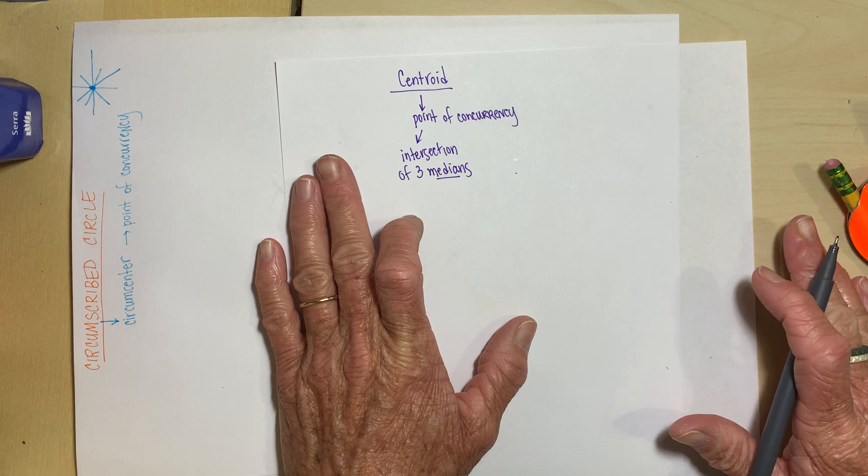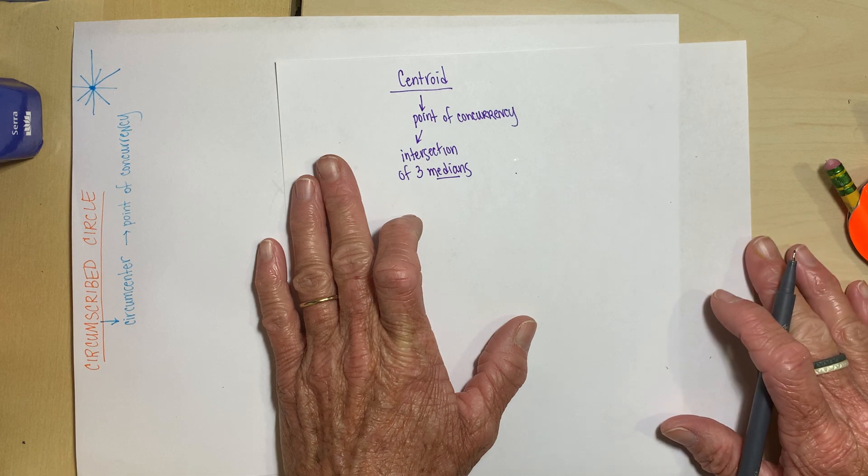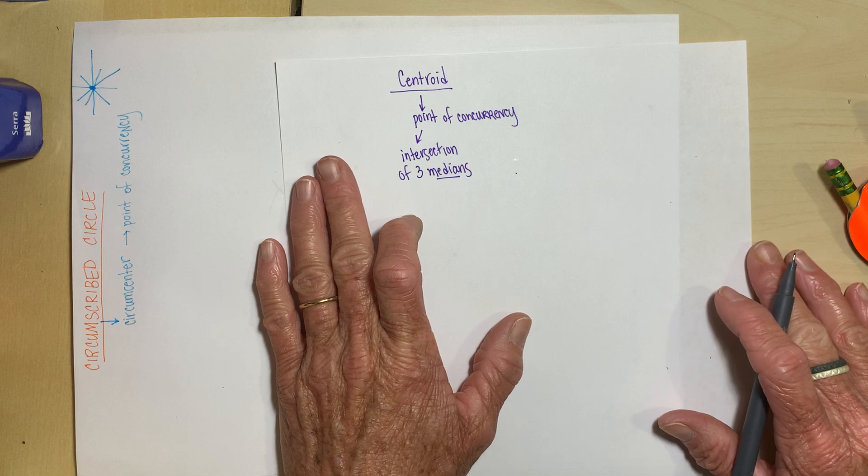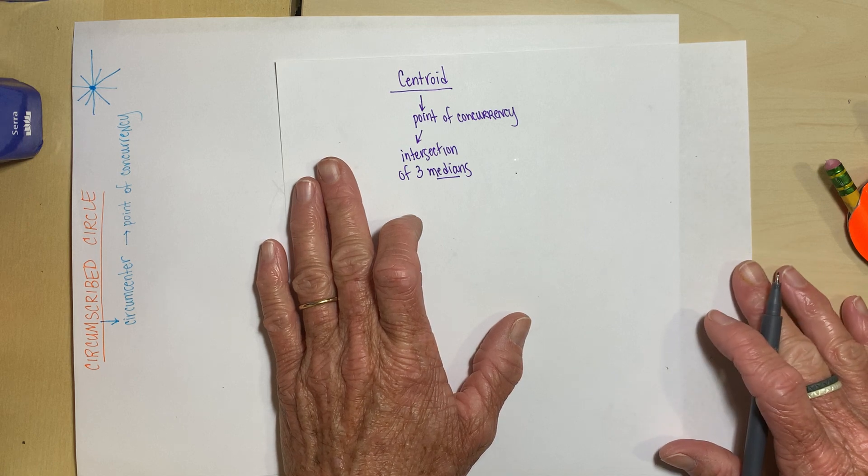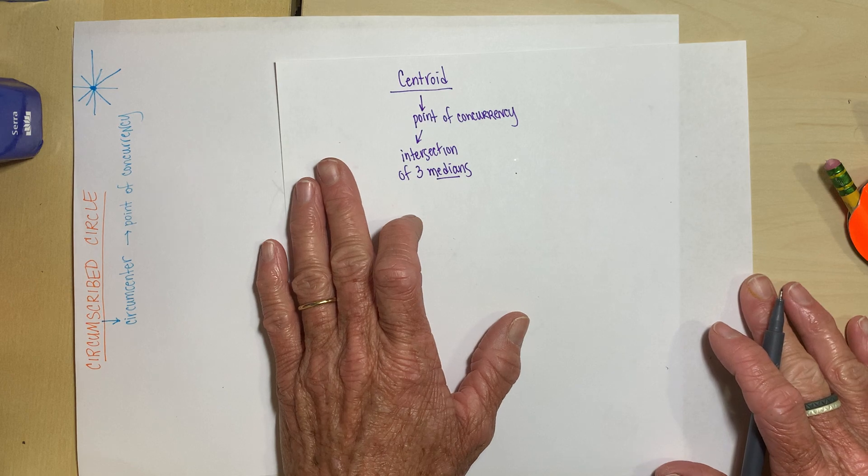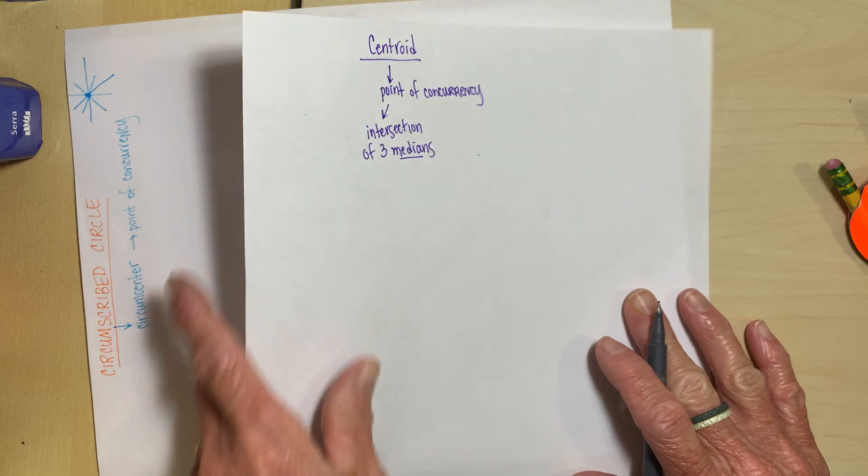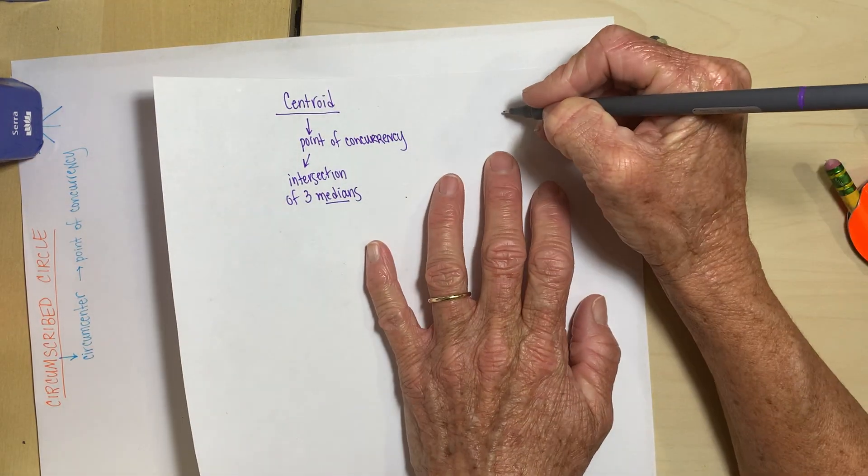So you know on the road, a median is in the middle of the road. When we're talking about our measures of central tendency, the median is the one in the middle when we write all the numbers in order. So it's really similar to that if you think about it. Here's what a median is.